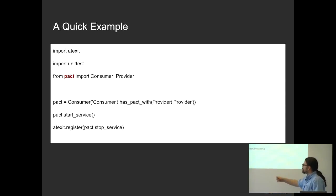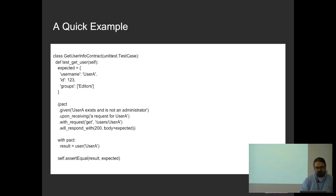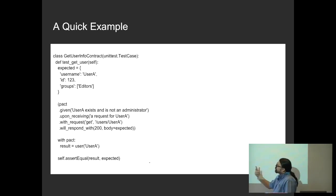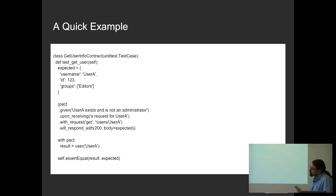In the code example, the most important portion is defining the consumer and provider objects. Once you define them, you can define a pact using the powerful DSL. You say: given "User A exists and is not an administrator", upon receiving a request for User A, it will respond with a 200 and the expected body. This mock service lets you run your APIs against it and generate reports.